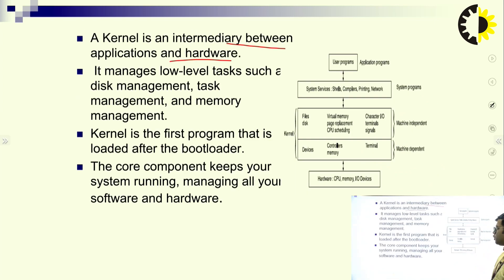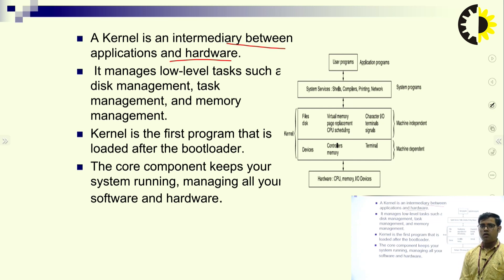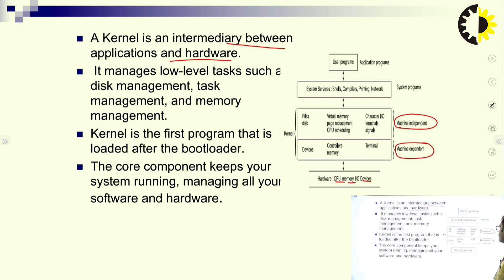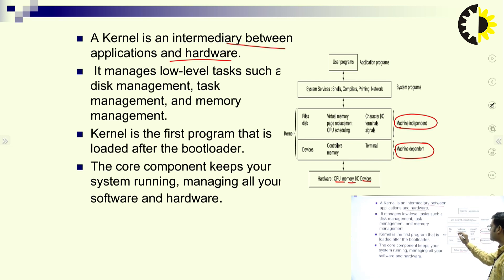Kernel manages low-level tasks such as disk management, task management, and memory management. Basically, kernel works at a low level and directly interacts with hardware like CPU, memory, and I/O devices. As you can see, kernel is divided into machine independent and machine dependent parts. Machine dependent resides include devices, control memory, and terminal. Machine independent resides include file disk, virtual memory, page replacement, CPU scheduling, character I/O terminals, and signals.